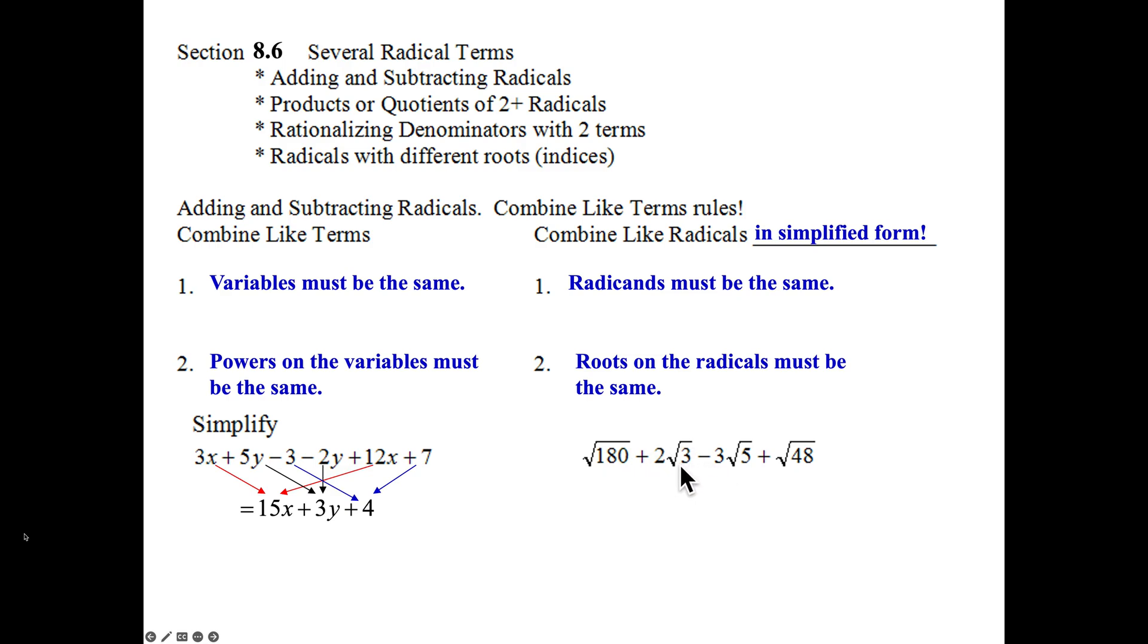So down here I have four square root symbols. They all have the same root, but notice all of the inside numbers are different. I can't combine them together. So here's where it says you have to write it in simplified form. 2 times the square root of 3, I can't get any simpler than just the square root of 3, and I can't get any simpler than the square root of 5. So the first thing I'm going to do is I'm going to say, look, the 3 and the 5 must be leftovers to the 48 and the 180.